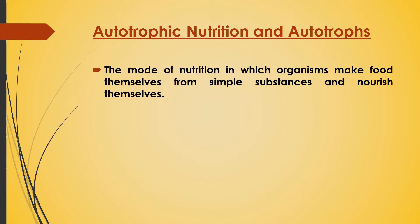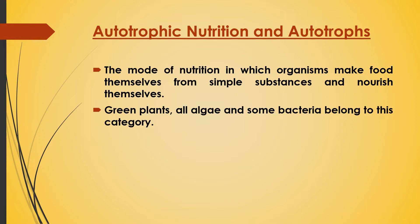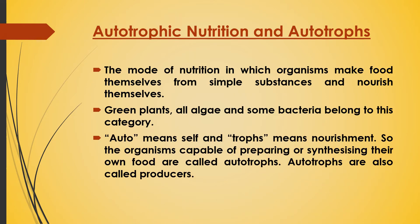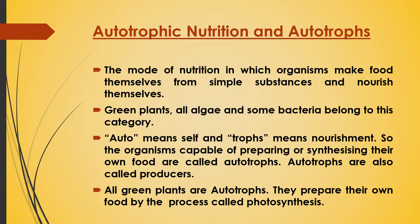Autotrophic nutrition: the mode of nutrition in which organisms make food themselves from simple substances and nourish themselves, i.e., organisms prepare their own food, is called autotrophic nutrition. Green plants, all algae, and some bacteria belong to this category. Autotrophs — 'auto' means self and 'troph' means nourishment. Organisms capable of preparing or synthesizing their own food are called autotrophs. Autotrophs are also called producers because they produce the food. All green plants are autotrophs; they prepare their own food by the process called photosynthesis.